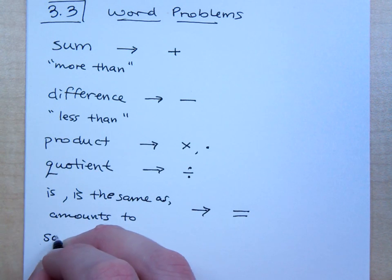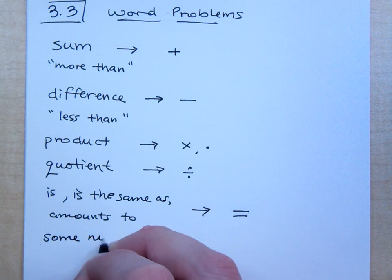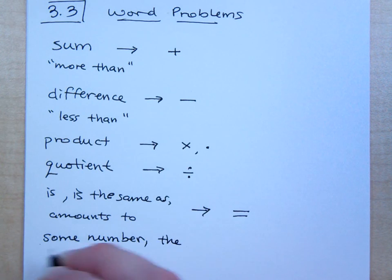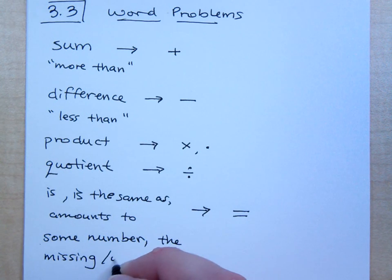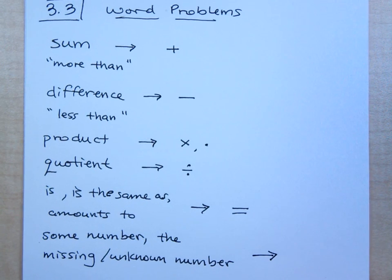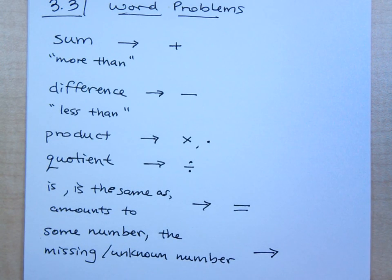And then we also need to be able to convert something like this. If I say something like some number or the missing or unknown number, how might you translate that? How might you write some number? A number that you don't know.